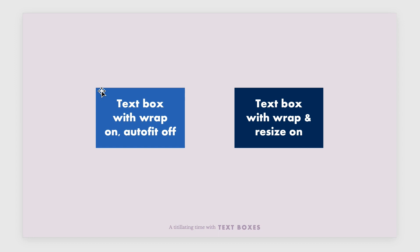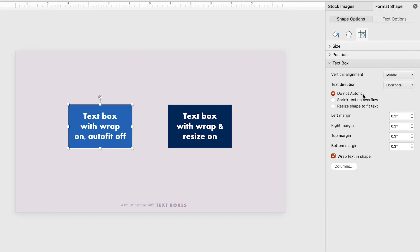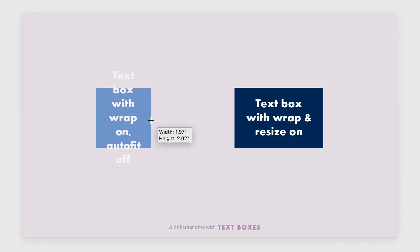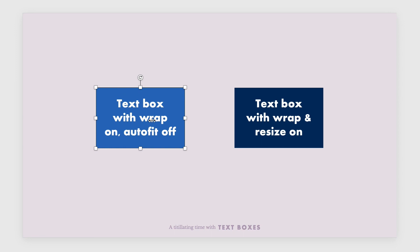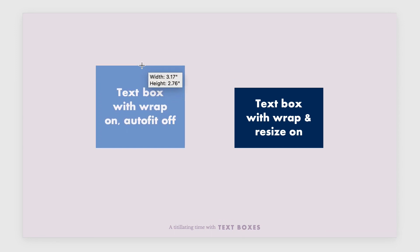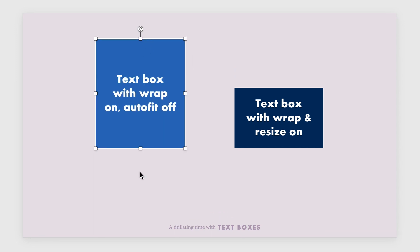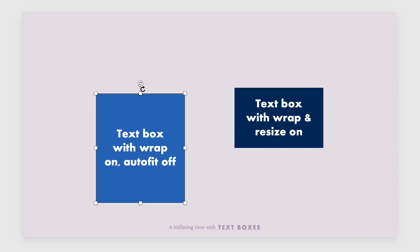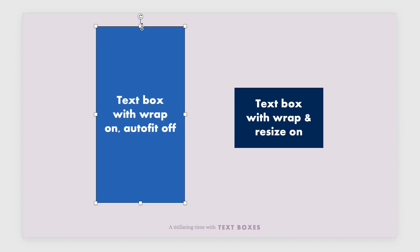Now let's look at the box on the left. This one is set to 'Do not auto fit,' but text wrap in shape is selected. So if I make the width smaller than the text, it spills out over the edge and doesn't automatically adjust. But as I stretch this one vertically, I can adjust the box height without it returning to the text size, which gives us a lot more options to play with.